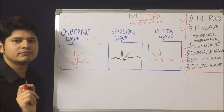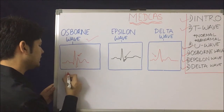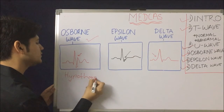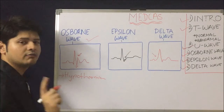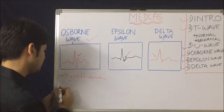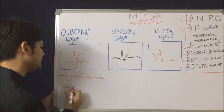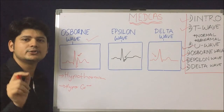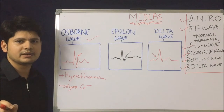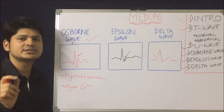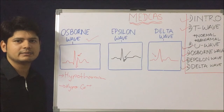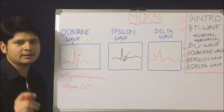In which condition is the Osborne wave seen? It is seen in hypothermia — that is the classical example. One more condition is hypercalcemia, where the Osborne wave is also seen. How to differentiate clinically: check the patient's temperature. In hypothermia, temperature will be low. In hypercalcemia, the temperature is normal or may even be elevated, and serum calcium will be high.